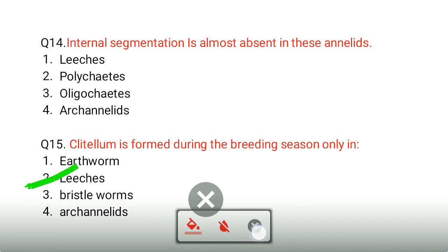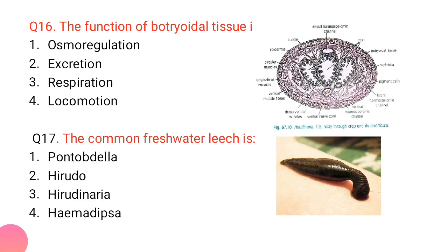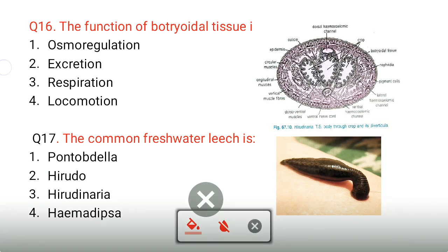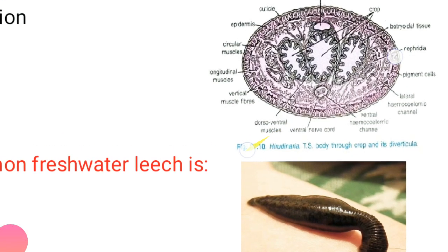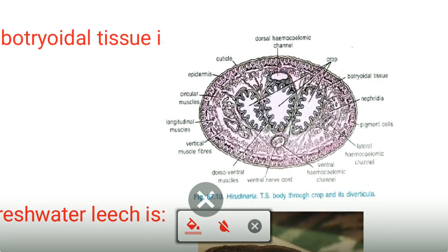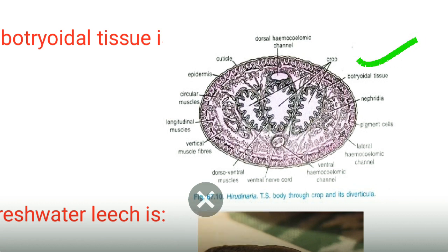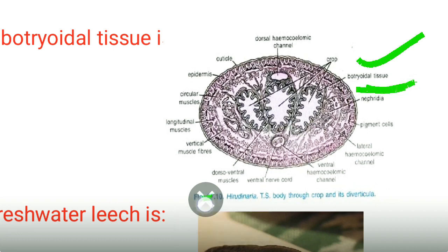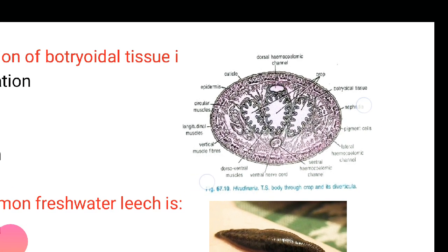The function of botryoidal tissue is excretory function. This is characteristic of Hirudinea. In annelids, parenchyma tissue and connective tissues invade out of the coelom and form this grape-like structure known as botryoidal tissue, which helps in excretion.